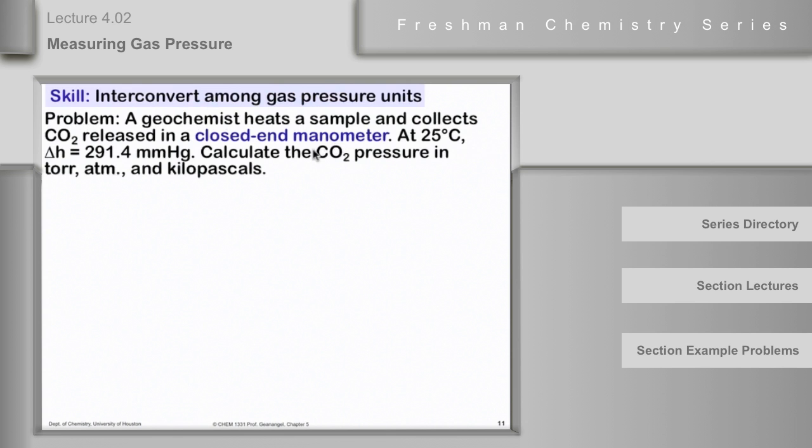Let's suppose we have an actual situation where a geochemist heats a sample of carbonate rock and collects CO2 that's released in a closed-end manometer. Think back what a closed-end manometer looks like. At 25 degrees, delta H of the closed-end manometer was 291.4 millimeters of mercury. Calculate the CO2 pressure in torr, atmospheres, or kilopascals. Remember, the closed-end manometer has a vacuum on the right side, so the pressure is zero in there. We don't have to worry about which side is plus delta H and which side is minus delta H - that's for an open-end manometer. In this case, delta H itself is equal to the gas pressure.